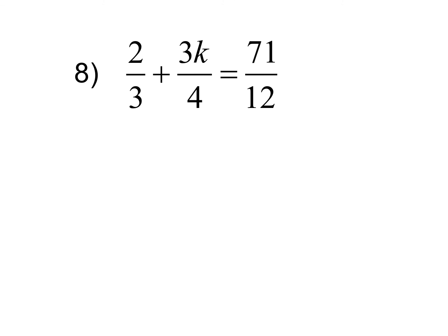Ladies and gentlemen, you guys requested me to do number 8. I want to get rid of fractions. I could choose to get rid of one fraction at a time, or I could choose to get rid of all fractions at the same time. If you're choosing to get rid of one fraction at a time, here's some advice: get rid of the fraction that has the biggest denominator. The biggest denominator is 12.